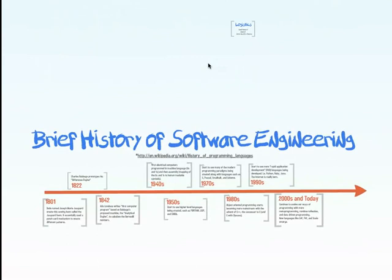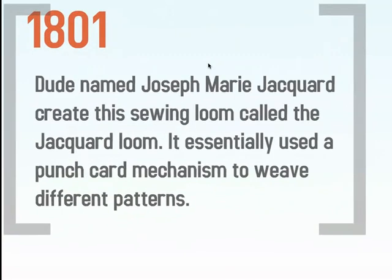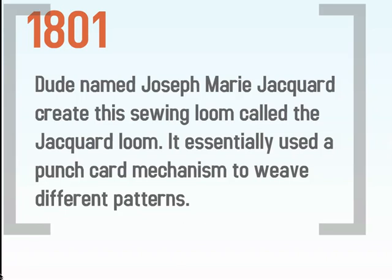So let's go over a brief history of software engineering. I took a high level of information from Wikipedia, so if you want to dig deeper there's a link there for you. Let's go all the way back to 1801. There's this guy named Joseph Marie Jacquard who created the sewing loom called the Jacquard Loom. Basically what it did is it took a punch card, read that punch card, and was able to form different types of weaves based on the pattern in the punch card. So we see an early example of using software engineering techniques to control a machine and automate a process.